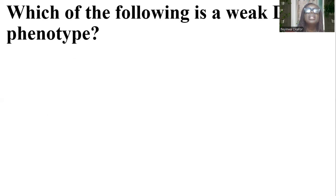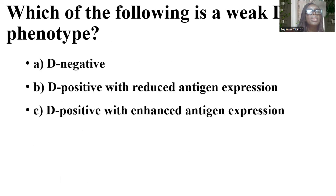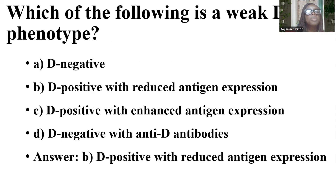Which of the following is the weak D phenotype? Options include: D-negative; D-negative with reduced antigen expression; D-positive with enhanced antigen expression; D-negative with anti-D antibodies. And the answer is B — D-positive with reduced antigen expression is the weak D phenotype.